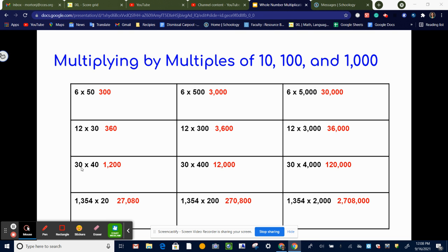So again, same pattern, 30 times 4, or you could say just multiply the non-zero numbers, which would be 3 times 4 is 12, and then add two zeros, because you count up the number of zeros that you have in total, which would be 1,200.